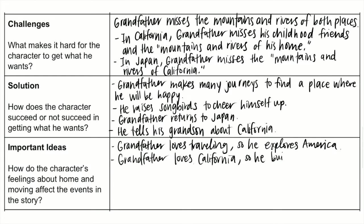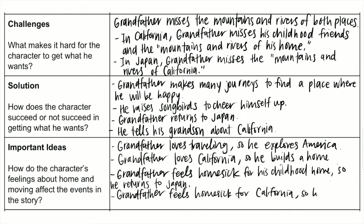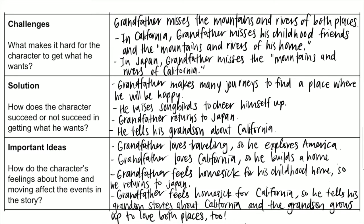And finally, important ideas about grandfather's journey: How do the character's feelings about home and moving affect the events in the story? Grandfather loves traveling, so he explores to America. He also loves California, so he builds a home there. Grandfather feels homesick for his childhood home, so he returns to Japan. And he feels homesick for California, so he tells his grandson stories about California. The grandson grows up to love both places too, showing that grandfather's feelings about home also affect his grandson.